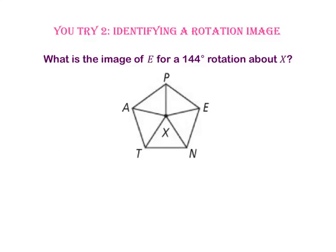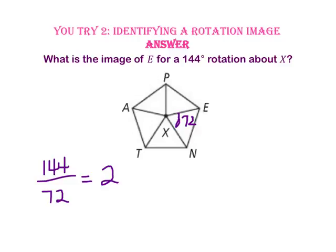Pause the video and do You Try number 2. What is the image of point E for a 144 degree rotation about point X? Each central angle is 72 degrees of our regular pentagon. So I take 144 divided by 72, which gives me two rotations. Since I'm looking for the image of point E rotated 144 degrees, that will be two rotations, or point A. Point A is the image of point E after a 144 degree rotation about point X.